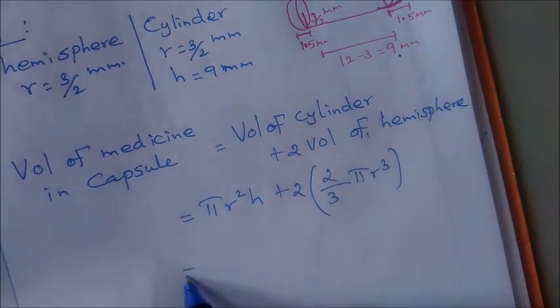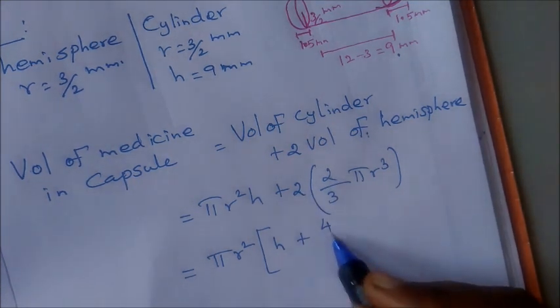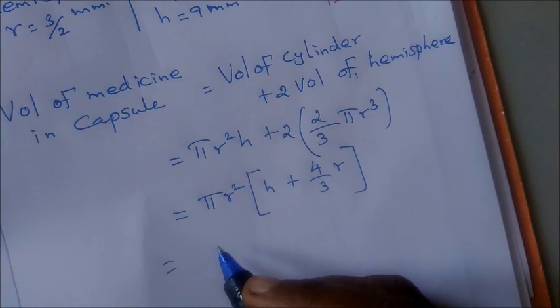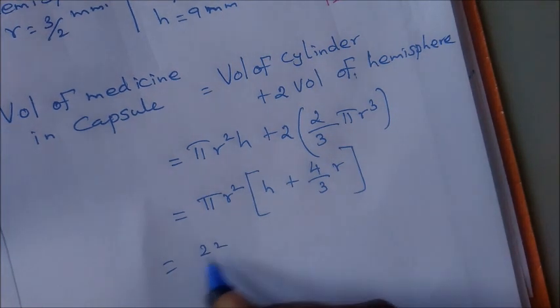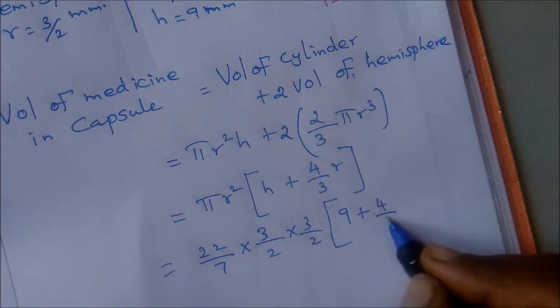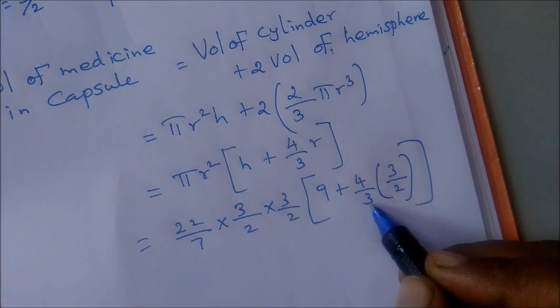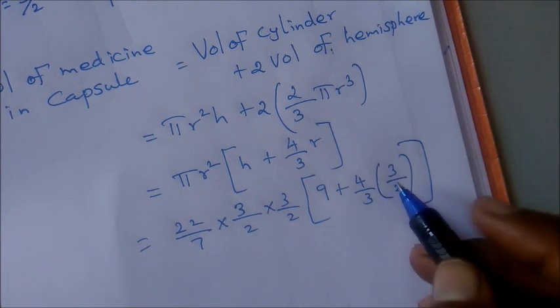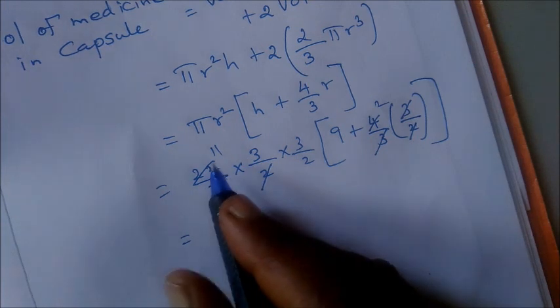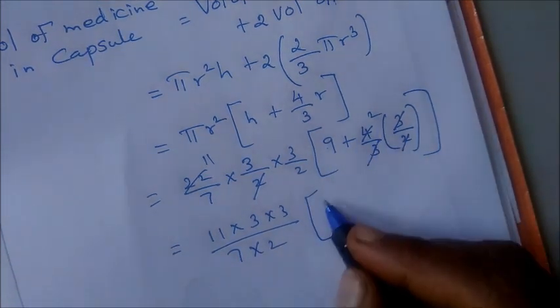Radius is the same in the combined figure. So pi r squared, h is 9 mm plus 4 by 3 into radius is 3 by 2. We can cancel rather than use decimals. So 3, 3 get cancelled. 2 table 2 get cancelled. Again 2 table 11 times.